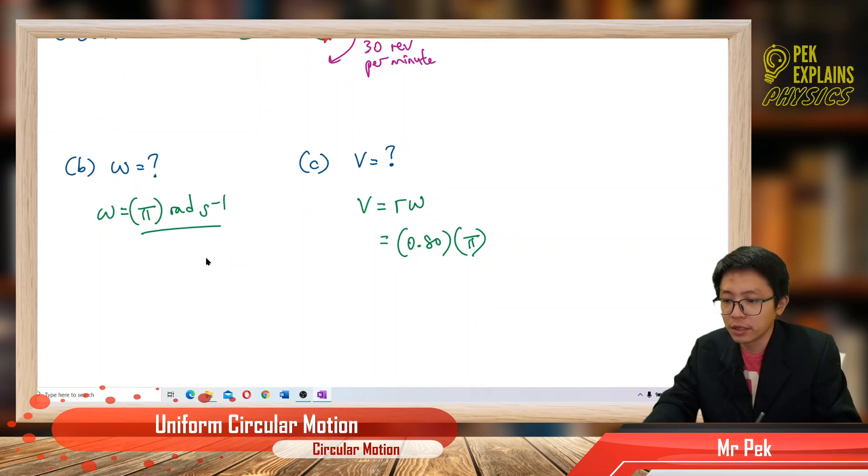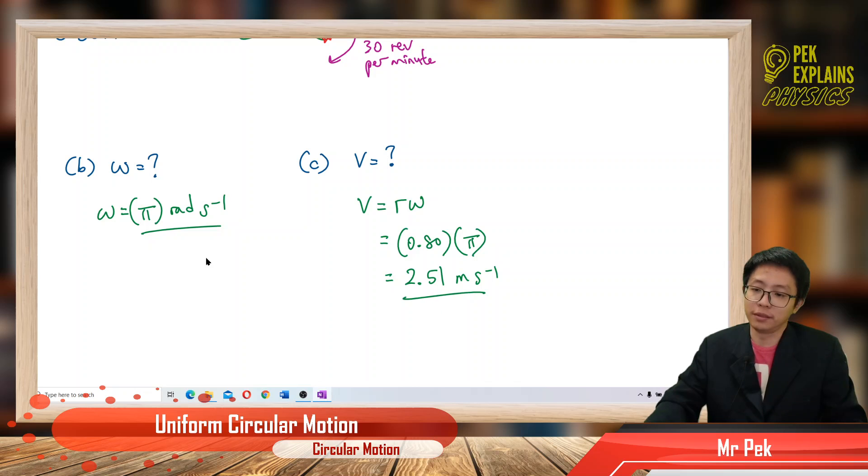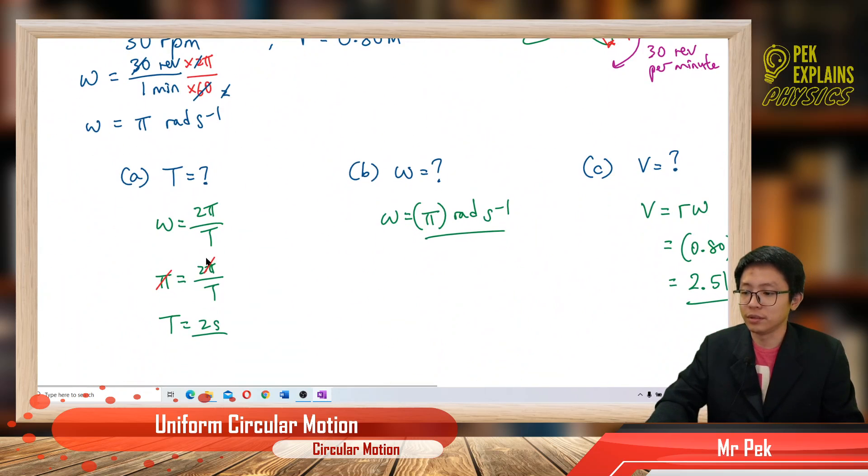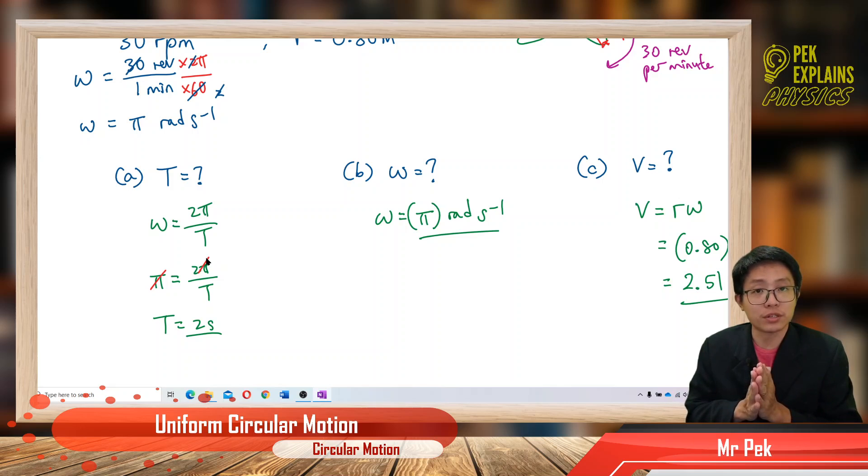Omega is π just now. So multiply, we got the answer 2.51 meter per second. That's the speed. Alright, see you in the next questions. Bye!